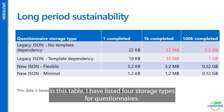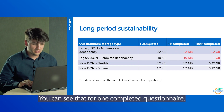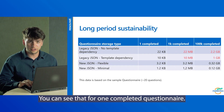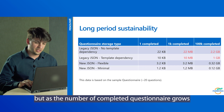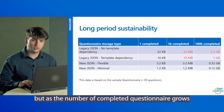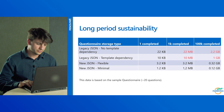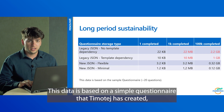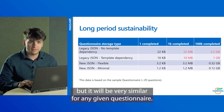In this table I have listed four storage types for questionnaires. The first two are legacy JSON and the next two are the new JSON storage types. You can see that for one completed questionnaire the difference in storage size is only a few kilobytes, but as the number of completed questionnaires grows and we get to 100,000, the storage size difference is two gigabytes. This data is based on a simple questionnaire that Dimotei has created, but it will be very similar for any given questionnaire.